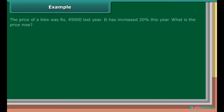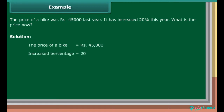Example: The price of a bike was Rs. 45,000 last year. It has increased 20% this year. What is the price now? Solution: The price of a bike is equal to Rs. 45,000. Increased percentage is 20. 20% of 45,000 is equal to Rs. 20 upon 100 into 45,000, which is equal to Rs. 9,000.